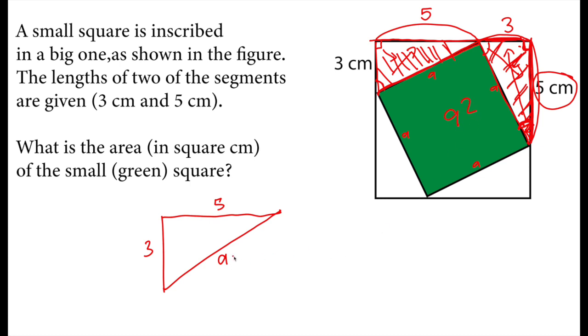Basically, I can find a² using the Pythagorean theorem. a² equals 3² plus 5². And a² is the area of the square.